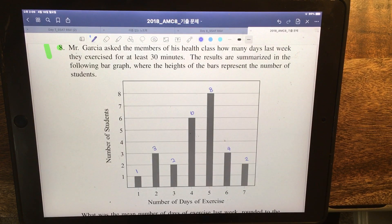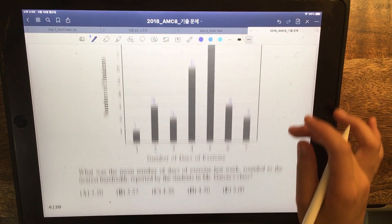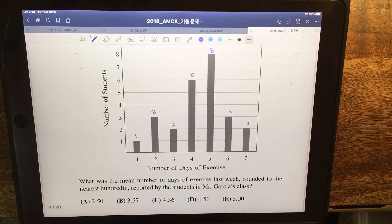The results are summarized in the following bar graph where the height of the bars represent the number of students. What was the mean number of days of exercise last week rounded to the nearest hundred reported by the students in Mr. Garshav's class?